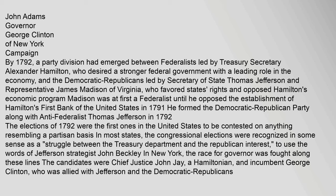By 1792, a party division had emerged between Federalists led by Treasury Secretary Alexander Hamilton, who desired a stronger federal government with a leading role in the economy, and the Democratic-Republicans led by Secretary of State Thomas Jefferson and Representative James Madison of Virginia, who favored states' rights and opposed Hamilton's economic program. Madison was at first a Federalist until he opposed the establishment of Hamilton's first Bank of the United States in 1791. He formed the Democratic-Republican Party along with Thomas Jefferson in 1792. The elections of 1792 were the first ones in the United States to be contested on anything resembling a partisan basis.